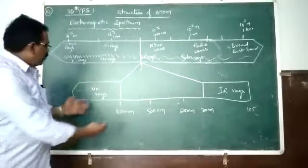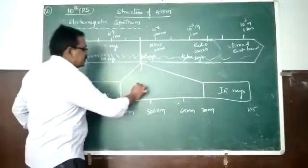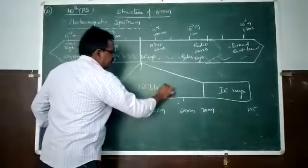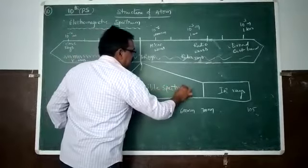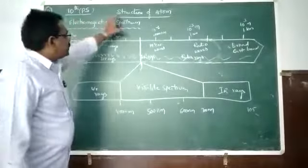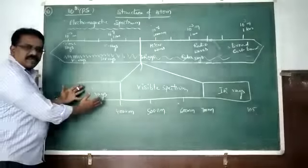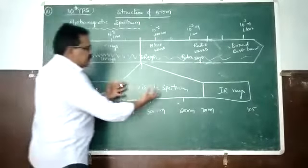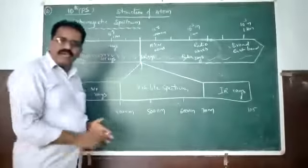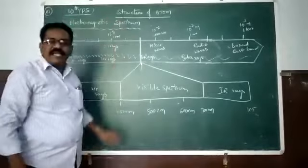The group of UV rays and visible spectrum and IR. These three are called electromagnetic spectrum. UV rays, visible spectrum and IR rays. These three combined are called electromagnetic spectrum.